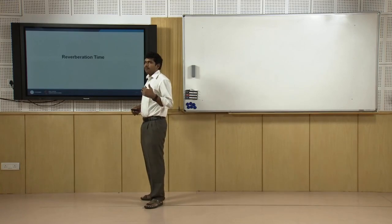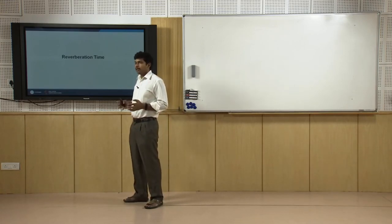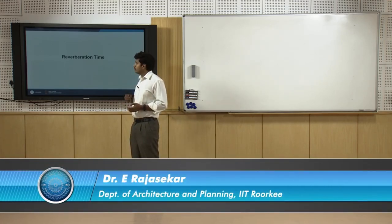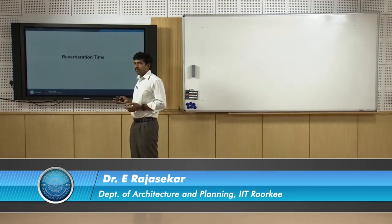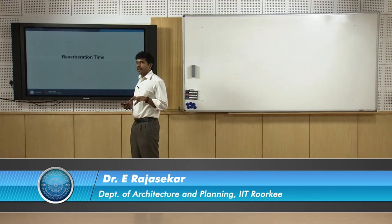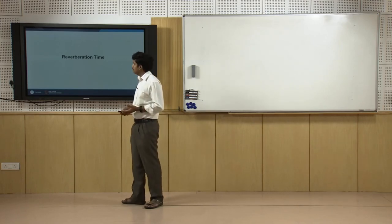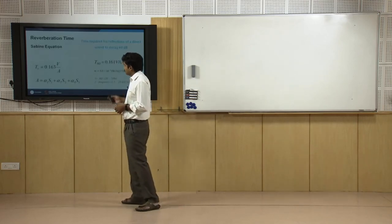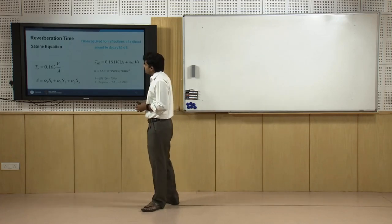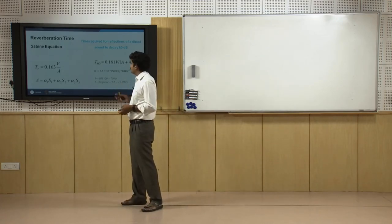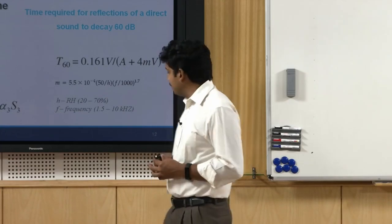We have looked at two indicators for background noise levels. Now we will look at one of the important indicators for indoor acoustic quality. Reverberation time is a very common, day-to-day term. This is one of the first and most commonly used indicators of acoustic quality — though not the only one — and one of the simpler indices to understand. Reverberation time is the time required for the reflections of a direct sound to decay by 60 decibels.